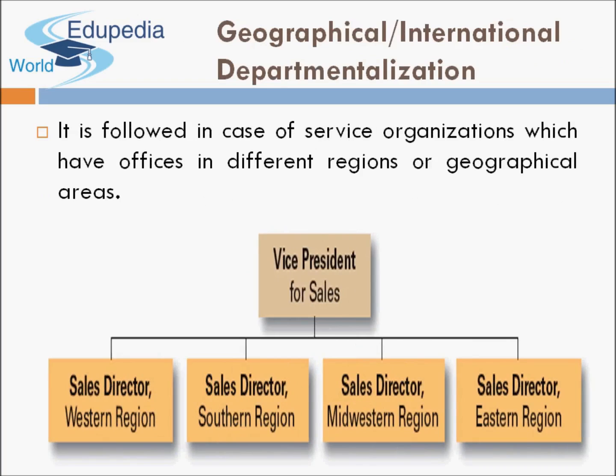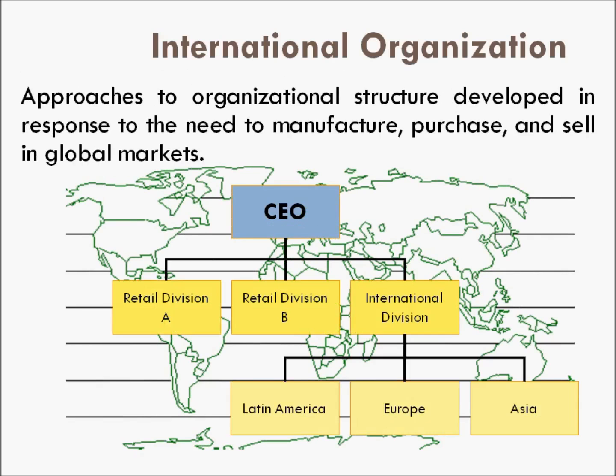Fifth is geographical departmentalization. When the organization is spread worldwide or across a large country like India, you can divide the organization into Western, Eastern, Southern, and Northern divisions. At a global level, you might have European, Asian, and American divisions. Each division deals with that particular region. This is followed in service organizations which have offices in different regions. For example, a company may have a Retail Division and an International Division that further deals with Latin America, Europe, and Asia.